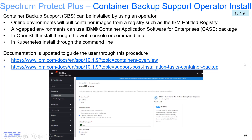In summary, we first uninstalled Spectrum Protect Plus version 10.1.8 and cleaned up from that. Then we went over and chose the option to do an online install. We set up a couple of things from the command line to get our operator advertised so we could see it in the OCP web console, and then we completed the install from the web console.